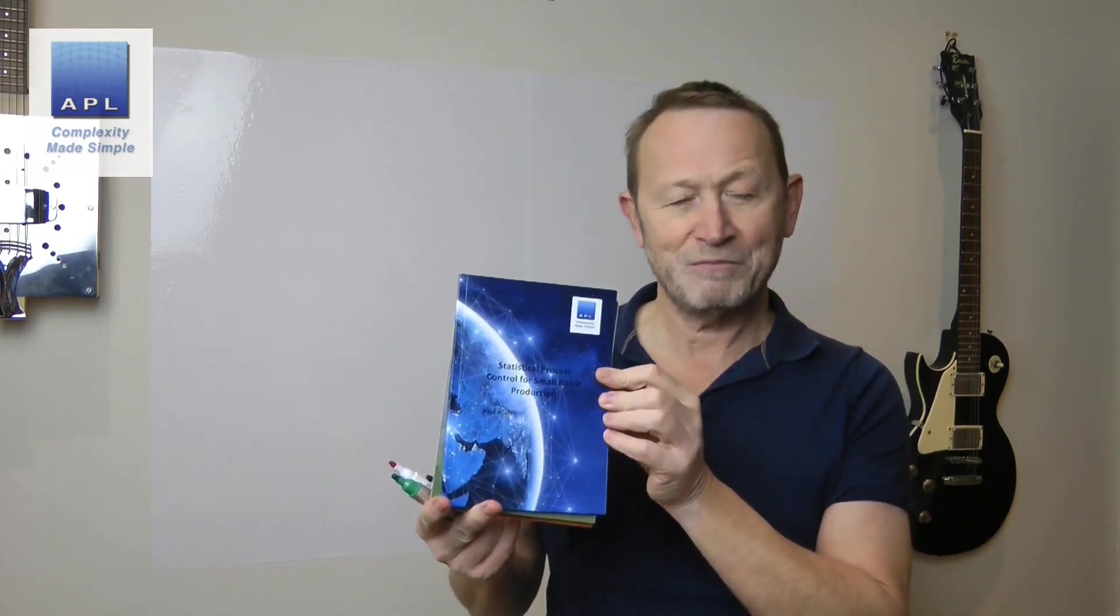Welcome to Complexity Made Simple, my name is Paul Allen. Before we get into today's video, I'm going to remind you about the three books that are on sale: Drink Tea and Read the Paper for green belts and black belts, Design of Experiments for 21st Century Engineers, and Statistical Process Control for Small Batch Production. They are all available from lulu.com and the links are in the video below.